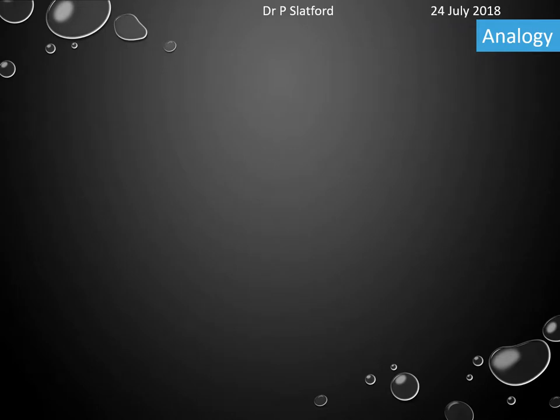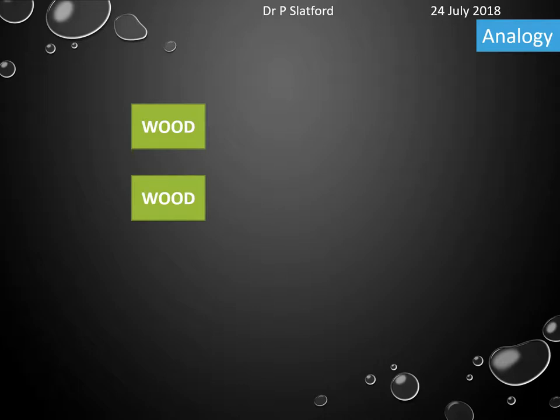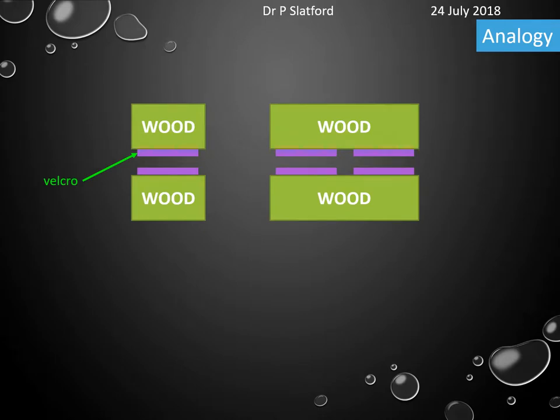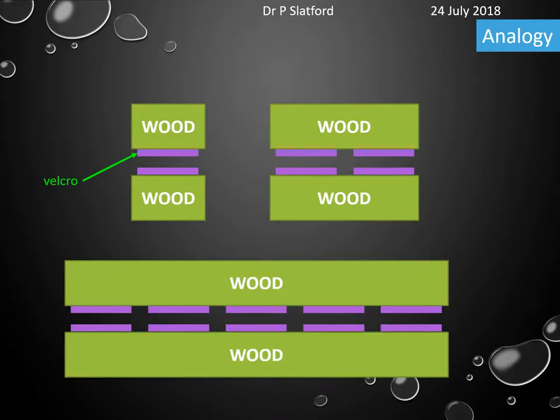To give an analogy: if I take two pieces of wood and stick some velcro on either one, I can stick them together and pull them apart. But if I had longer bits of wood with more velcro on them, once stuck together they'd be harder to pull apart. And with an even longer piece of wood with even more velcro, there are even more opportunities for attraction, making it even harder to pull apart. This is my analogy for explaining the boiling point increase as we increase chain length.